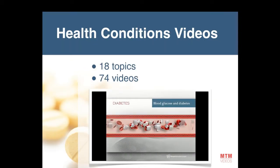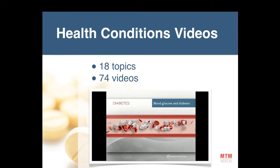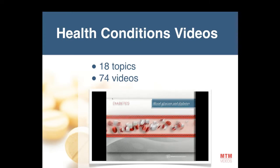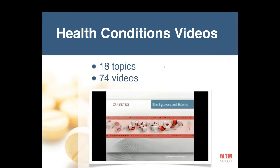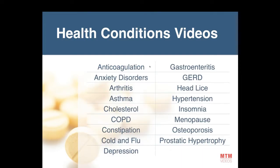Blood glucose and diabetes is a chronic disease which affects how your body uses blood glucose, commonly called blood sugar. That was just the beginning of the diabetes video — it's part of the health conditions video library. Those health conditions cover 18 different topics for a total of 74 videos. Our topics cover the top 300 most sold medications in the US, so there's a good chance that for any prescription you receive, there will be a video associated to it.